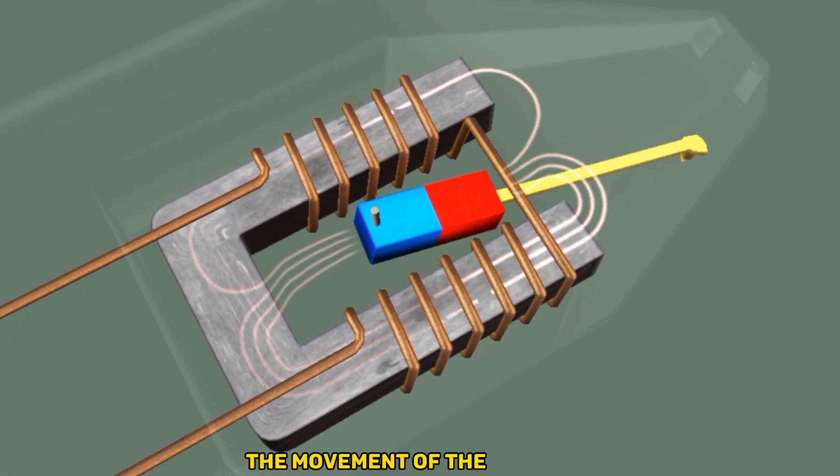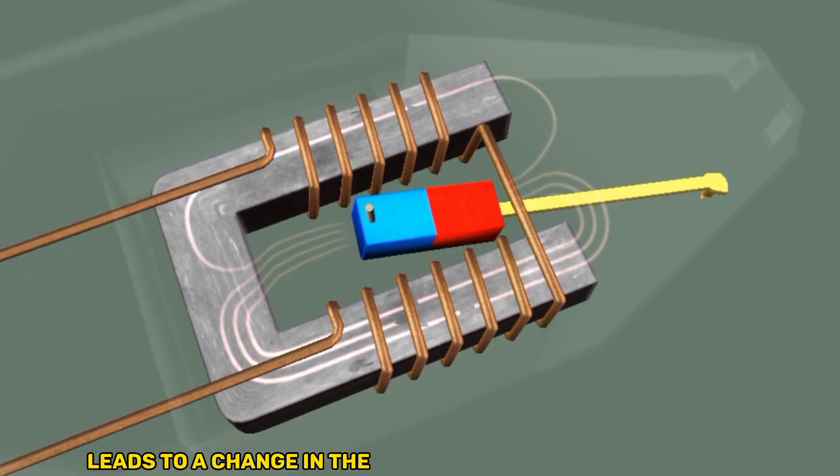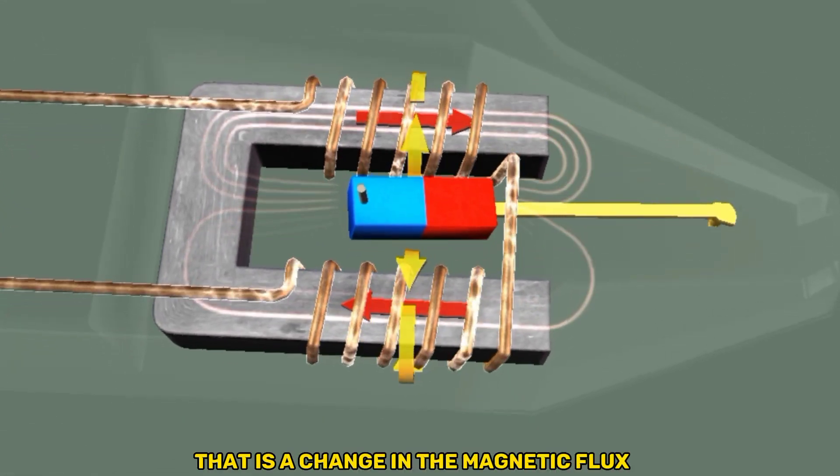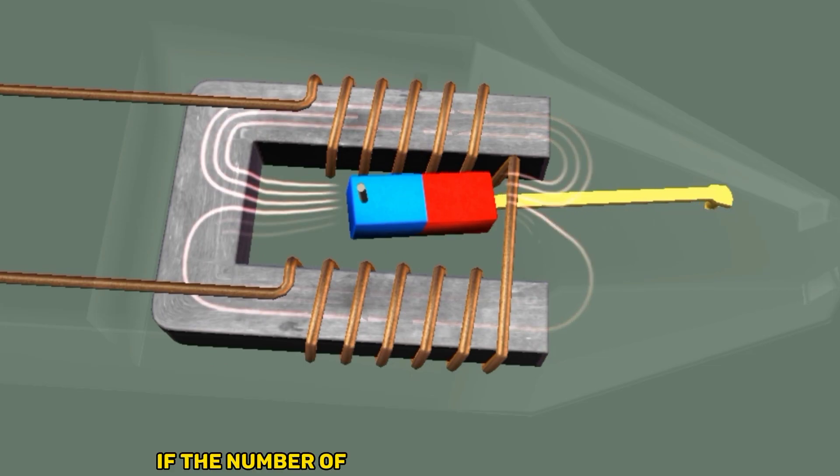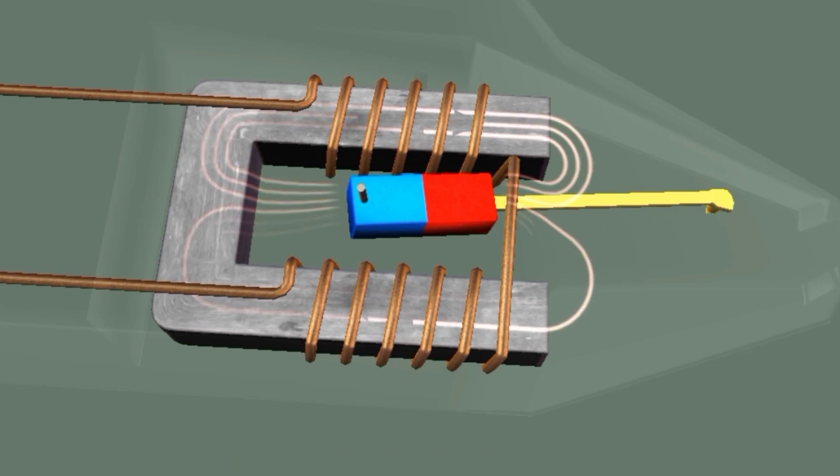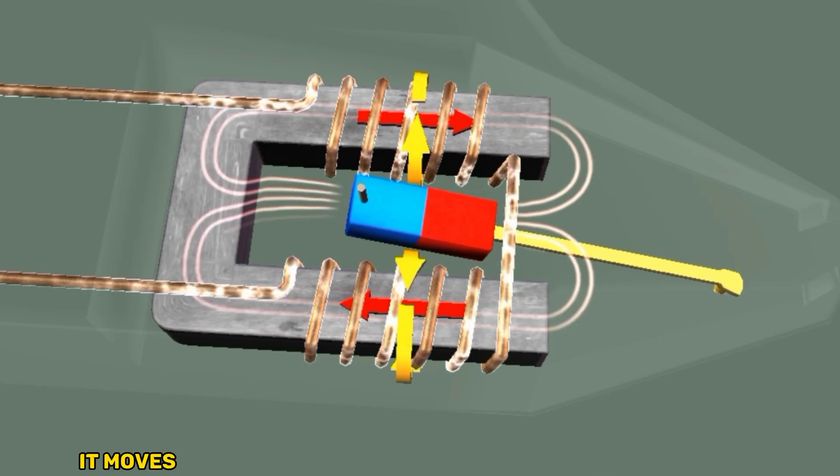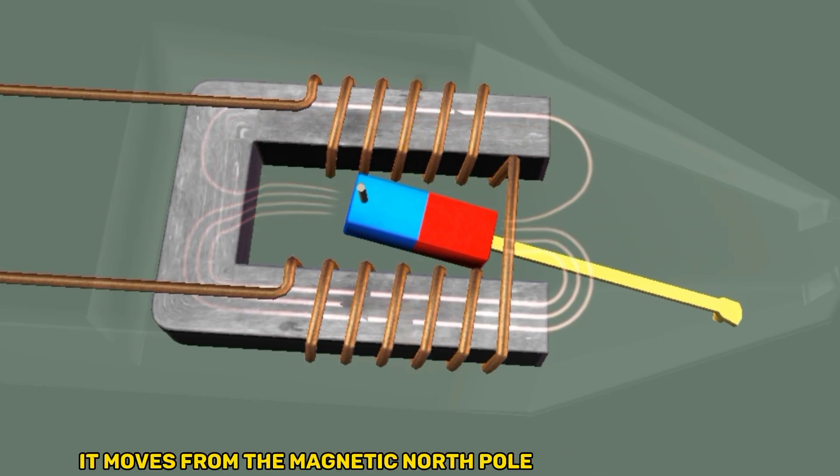The movement of the magnet leads to a change in the number of magnetic field lines. That is, a change in the magnetic flux. If the number of magnetic field lines grows, magnetic flux change is positive. Therefore, it moves from the magnetic north pole to the south pole.